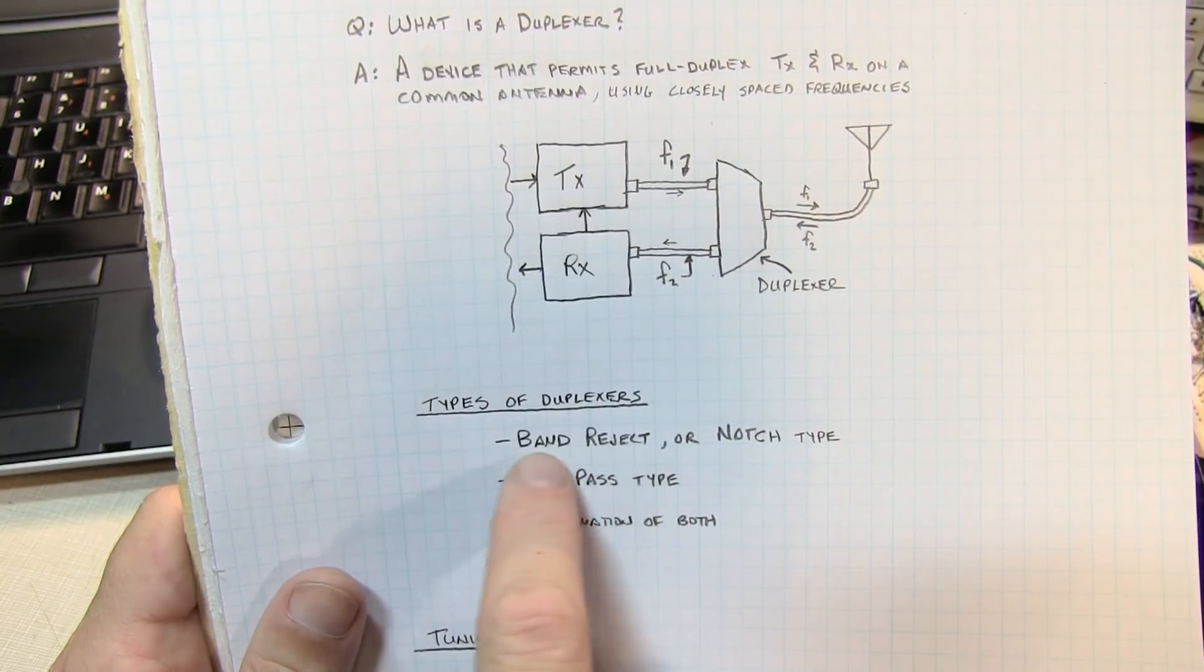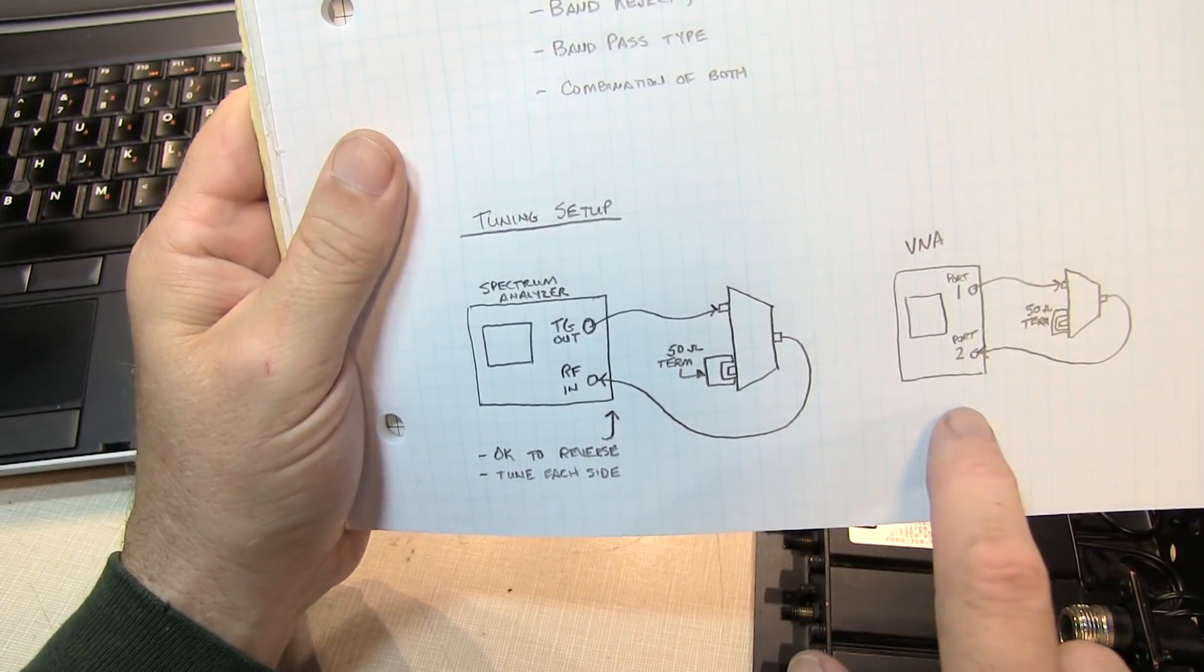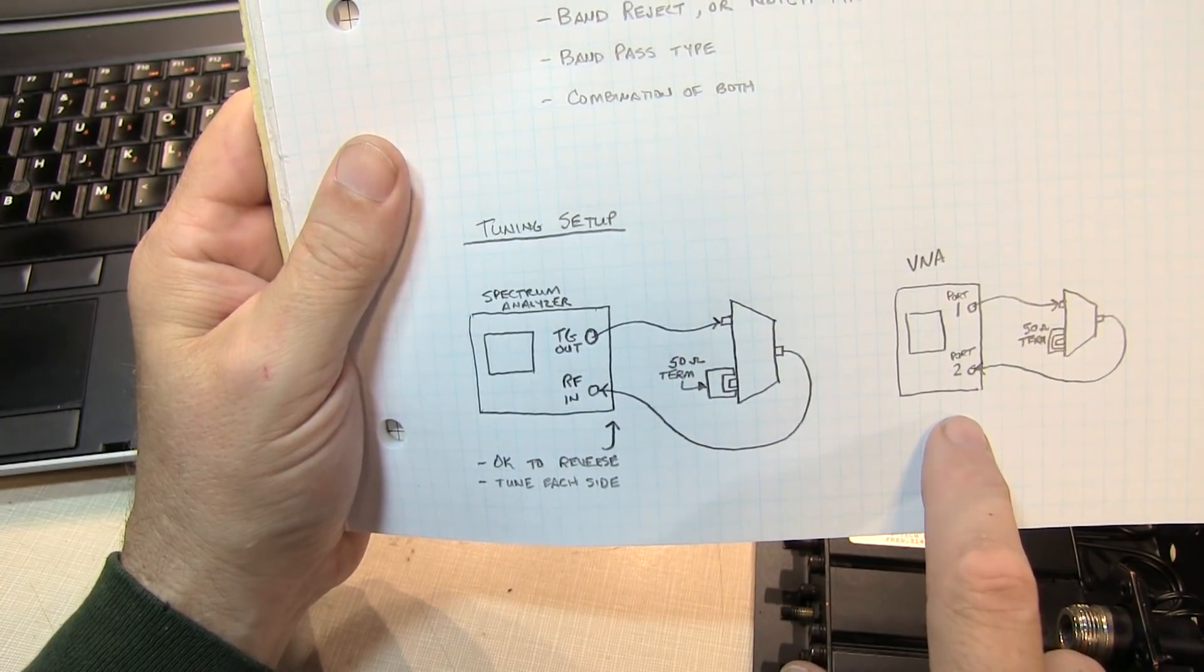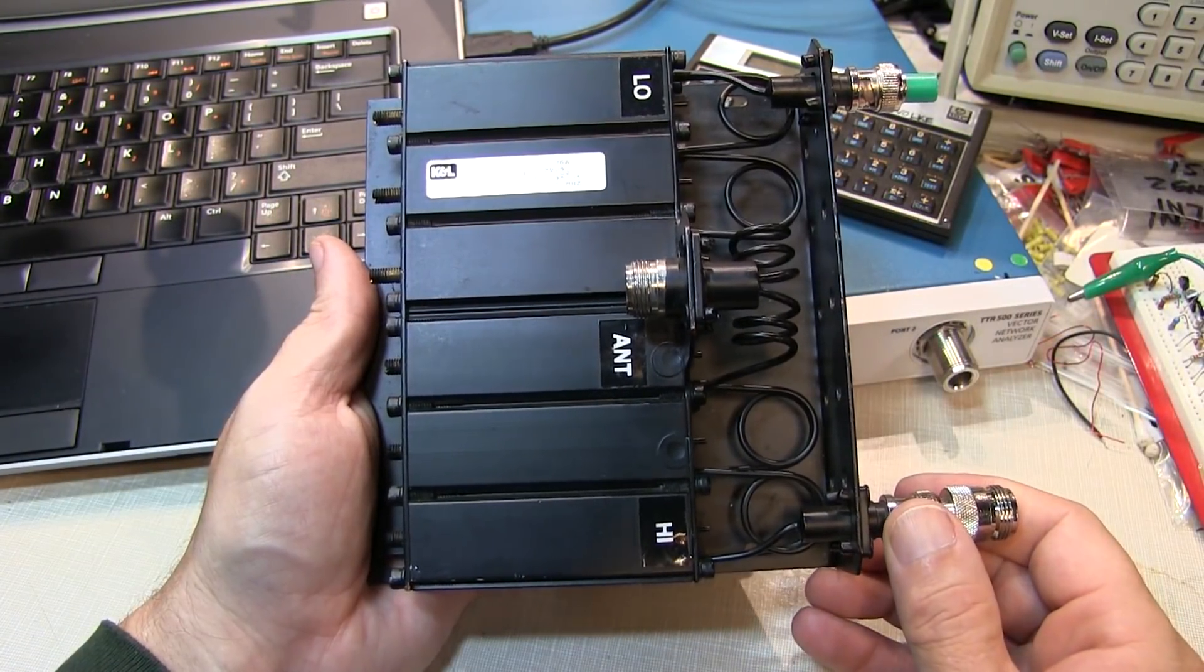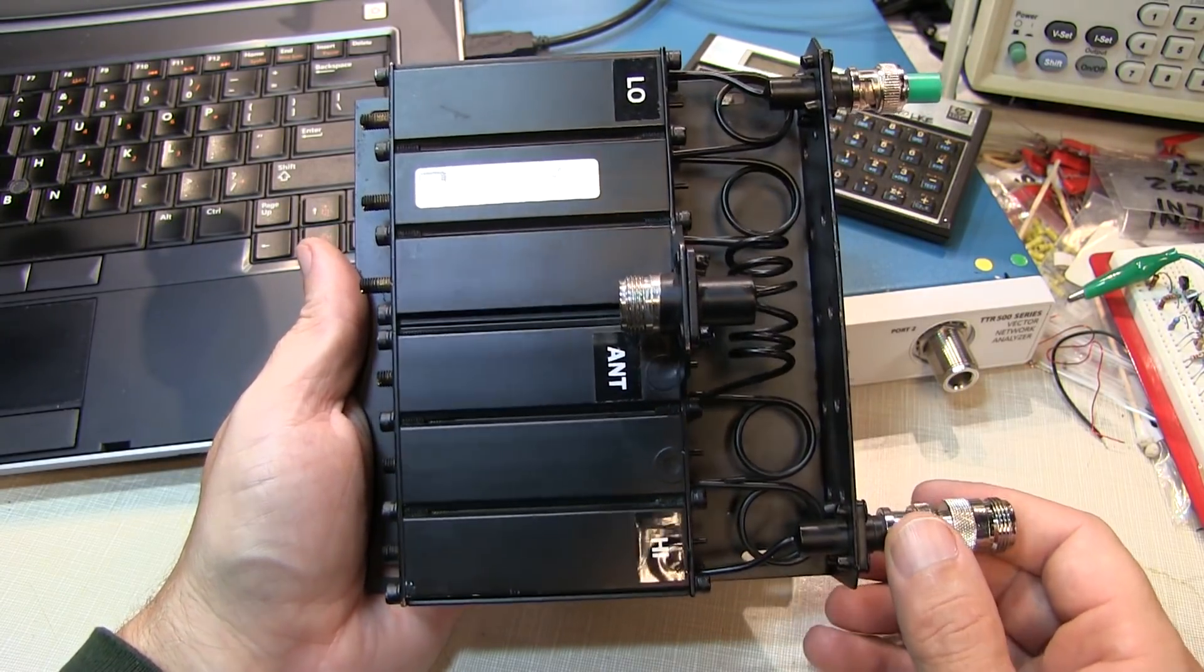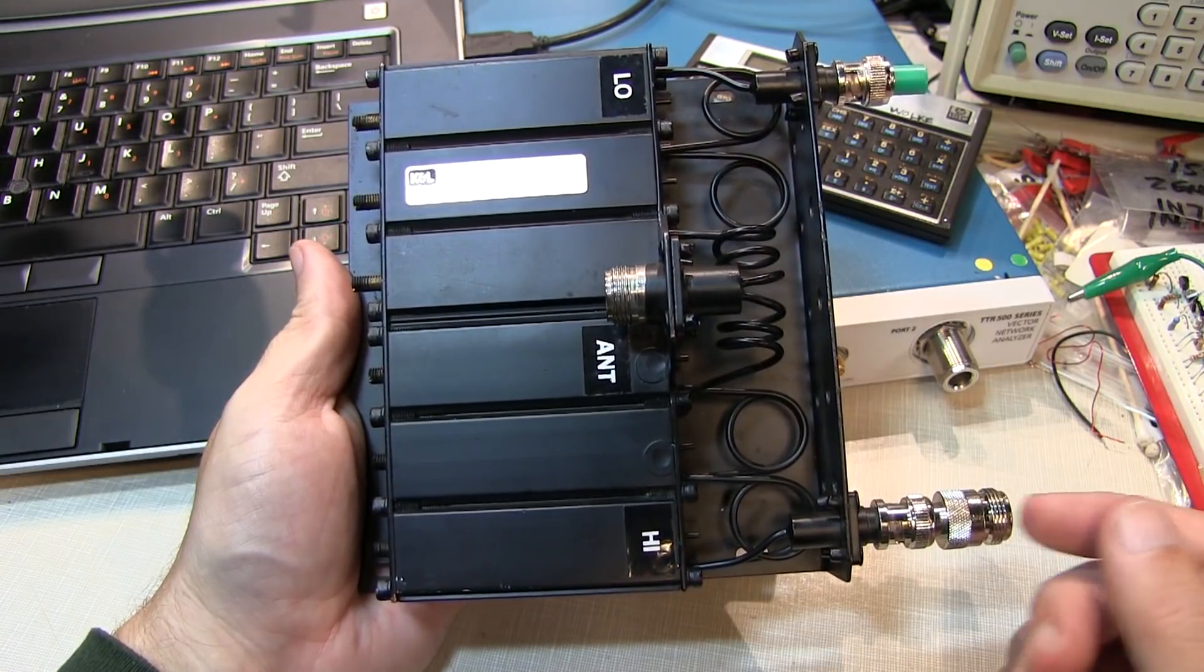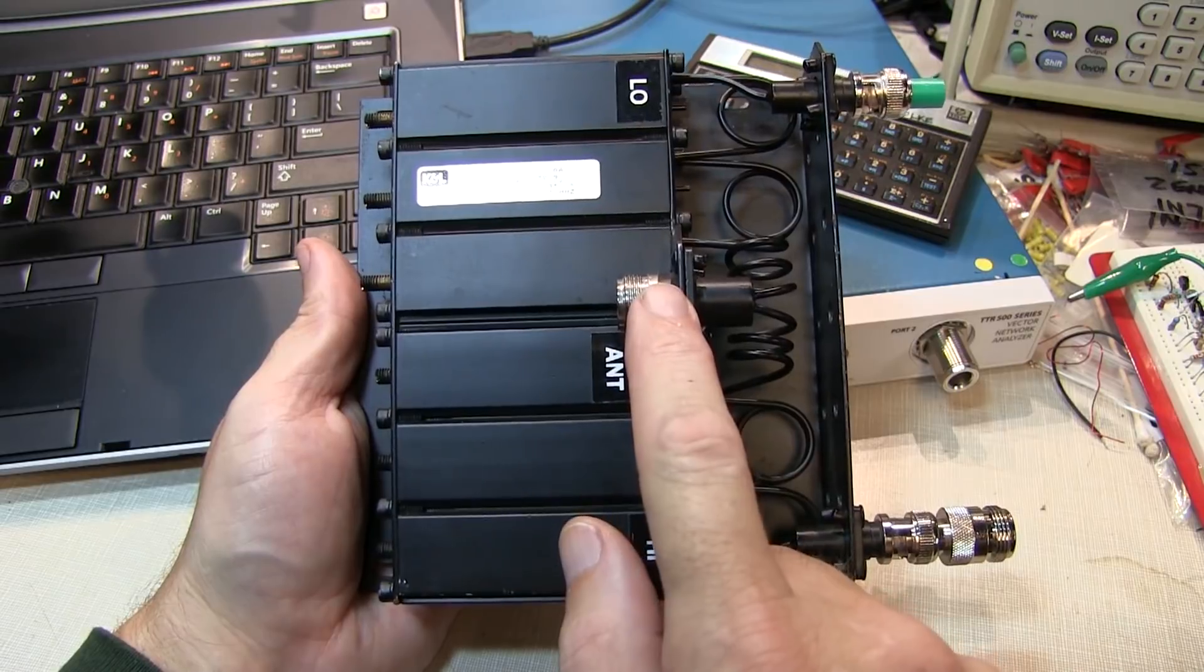But for today we're going to just show tuning a band reject filter with both a spectrum analyzer and with a VNA. This is the duplexer we'll be using for today's video. It's a simple band reject or notch type duplexer. We have an operating frequency pair, a high upper frequency and a lower frequency, and they go through to a common antenna port.